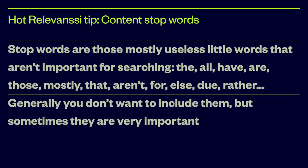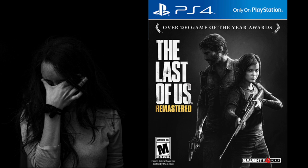To give you a concrete example of how Relevanssi can make the search better, let's look at a premium feature called content stop words. Stop words are the useless little words that search engines want to skip when processing posts — those little words that don't really mean much and appear many times in all posts. In general these words are not needed in the search, but sometimes they are super important. 'The Last of Us', for example, is one of those really annoying titles that are made of stop words only. If you search for 'the last of us', you'll find nothing, because all the words are stop words.